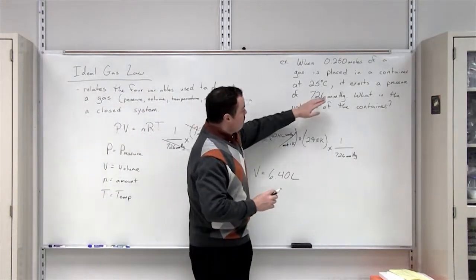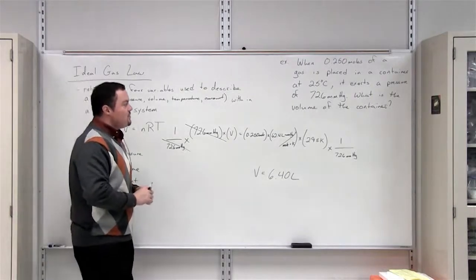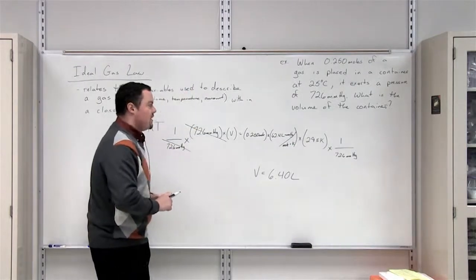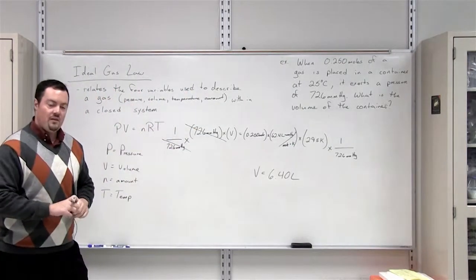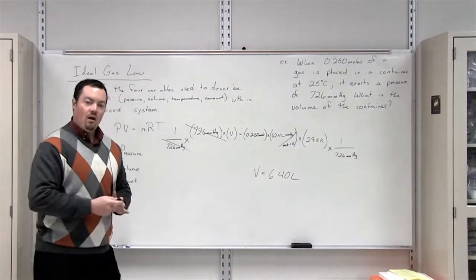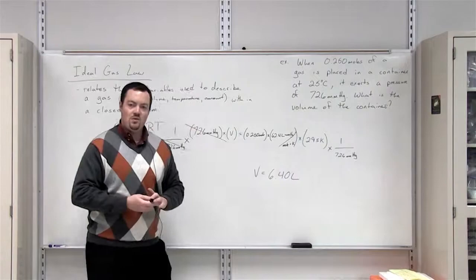Whenever we put this gas into a container and it exerts its pressure of 726 millimeters of mercury, it's at room temperature or 25 degrees Celsius, and it contains 0.250 moles of gas, the volume of that container that that gas is in must be 6.40 liters.